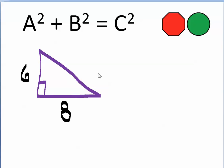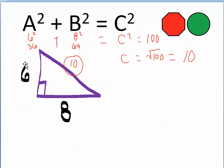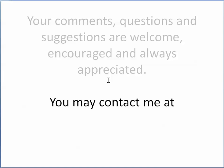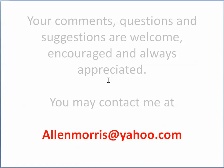Let's take a look at this last one. A squared is 6 squared, which is 36. B squared is 8 squared, which is 64. Adding 36 to 64, we get 100. So c squared equals 100. Taking the square root of c squared gives us c, and the square root of 100 is 10. The longest line in this right triangle is the hypotenuse at 10. You may already recognize that this is just the 3-4-5 triangle dilated by a factor of 2: 2 times 3 is 6, 2 times 4 is 8, and 2 times 5 is 10. Your comments, questions, and suggestions are welcome, encouraged, and always appreciated. You may contact me at alanmorris at yahoo.com.